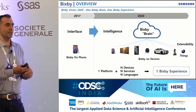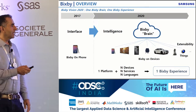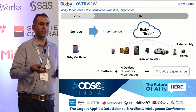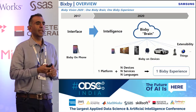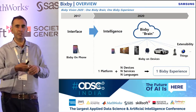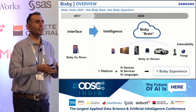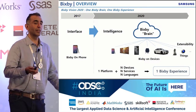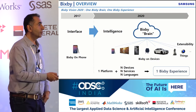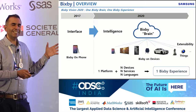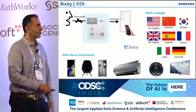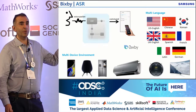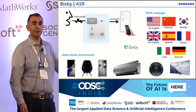Bixby has voice, vision, and data — all kinds of intelligence. Bixby now has about 50 million registered users, is available in 200 countries, and runs on about 500 million devices. Samsung ships more than 500 million devices a year, and Bixby is running in all of them. Today I'm going to talk about what is critical to make these voice assistants work — you need a speech recognition system.